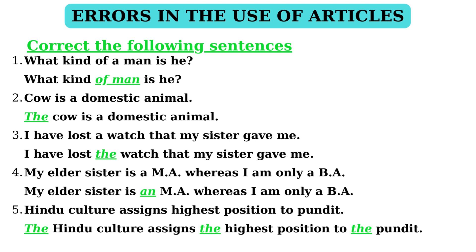In statement 3: 'I have lost a watch that my brother gave me.' — again, an incorrect statement. A particular watch is being referred to, so we have to use the article 'the' because we speak of a particular thing. The correct statement is: 'I have lost the watch that my brother gave me.'